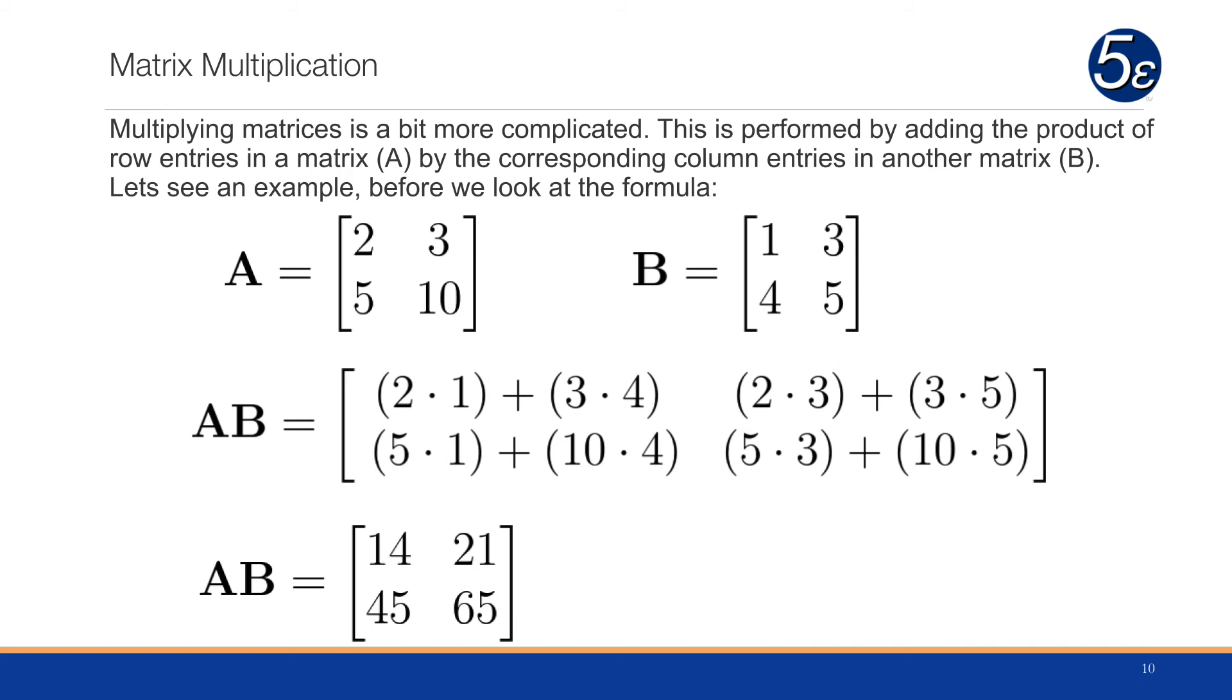Matrix multiplication is a bit more complicated. We add the product of the row entries in matrix A by the corresponding column entries in matrix B. A times B equals 2 times 1 plus 3 times 4, which is the first element. Then 2 times 3 plus 3 times 5 is the second element of the first row. In the second row, 5 times 1 plus 10 times 4, then 5 times 3 plus 10 times 5. Therefore, the product is 14, 21, 45, and 65.